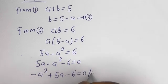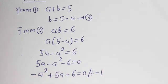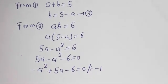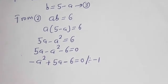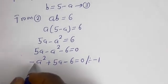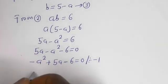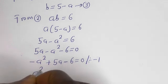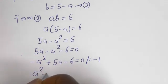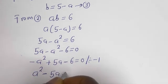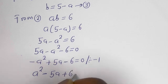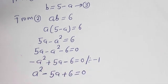Let's divide all terms by minus 1. Then we get a squared minus 5a plus 6 is equal to 0.